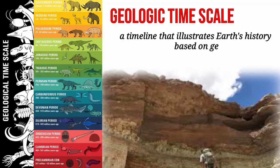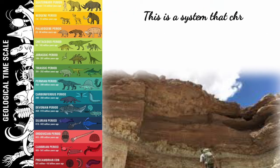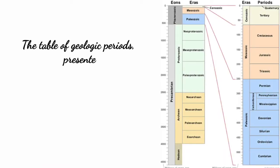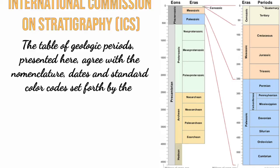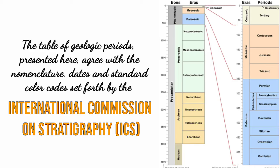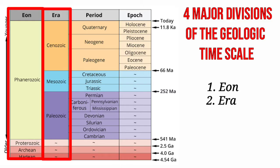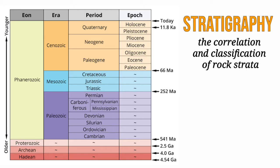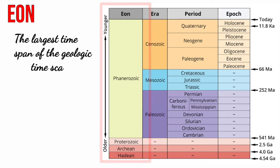The geologic timescale is a timeline that illustrates Earth's history based on geologic events and life forms. This is a system that chronologically relates geological strata to time. The table of geologic periods presented here agrees with the nomenclature, dates, and standard color codes set forth by the International Commission on Stratigraphy. There are four major divisions of the geologic timescale: the eon, the era, the period, and the epoch. These geologic time units are based on stratigraphy, which is the correlation and classification of rock strata. The eon is the largest time span of the geologic timescale.